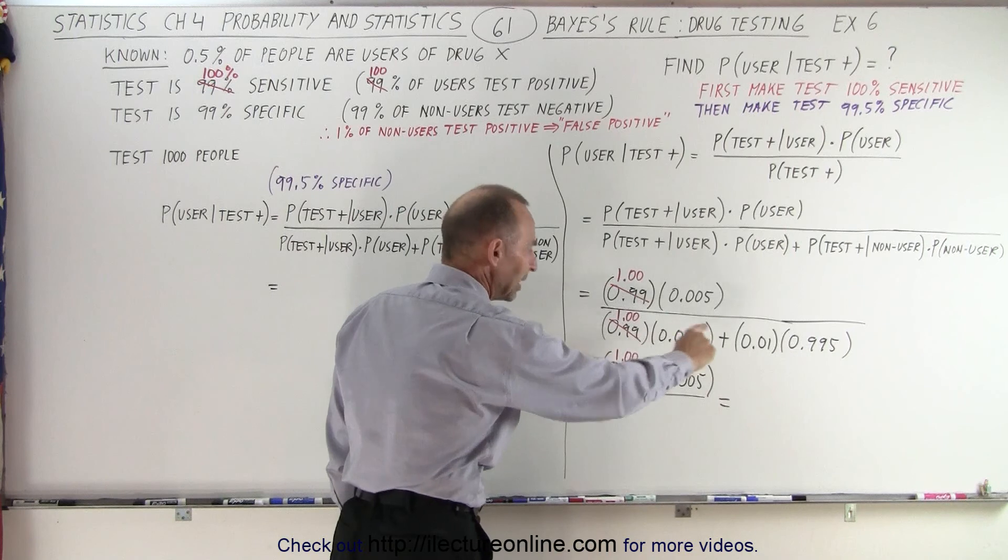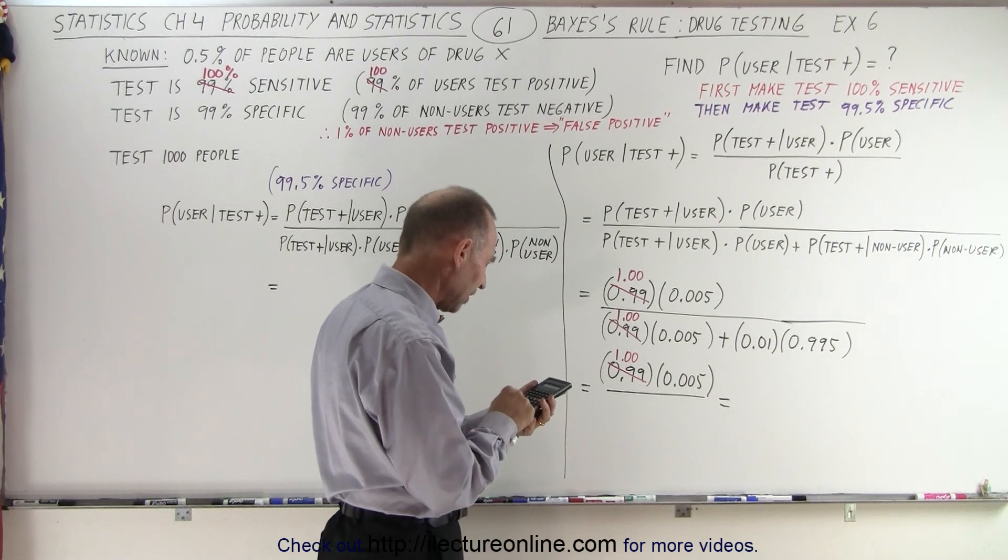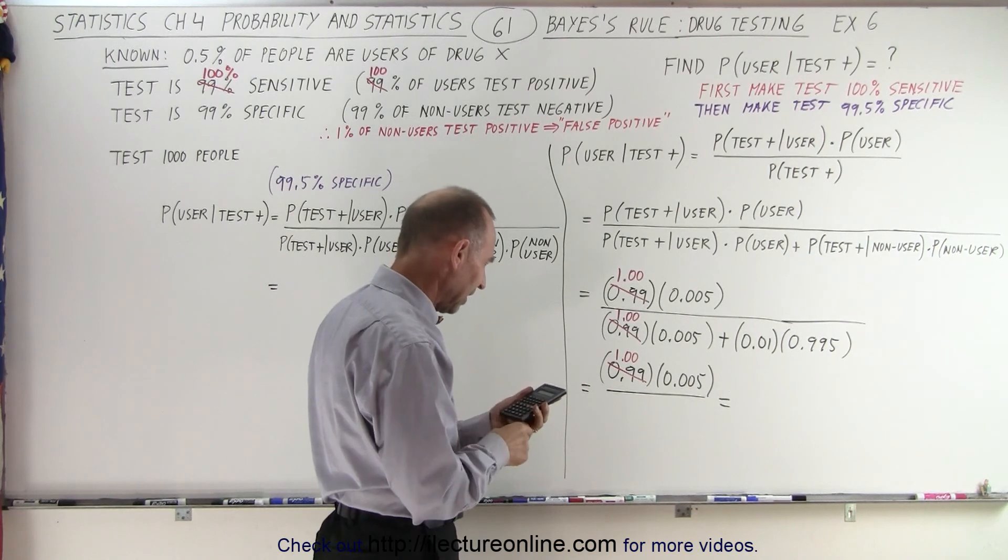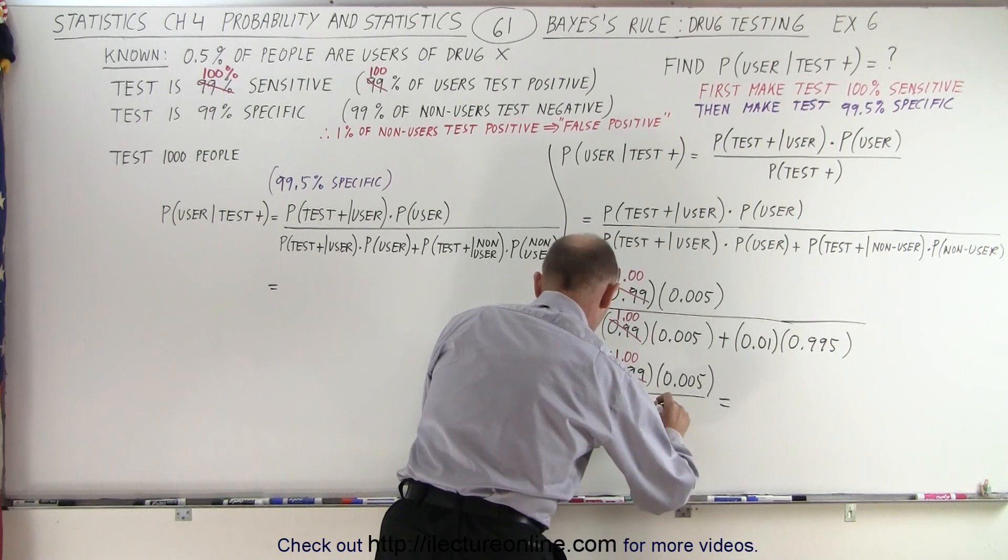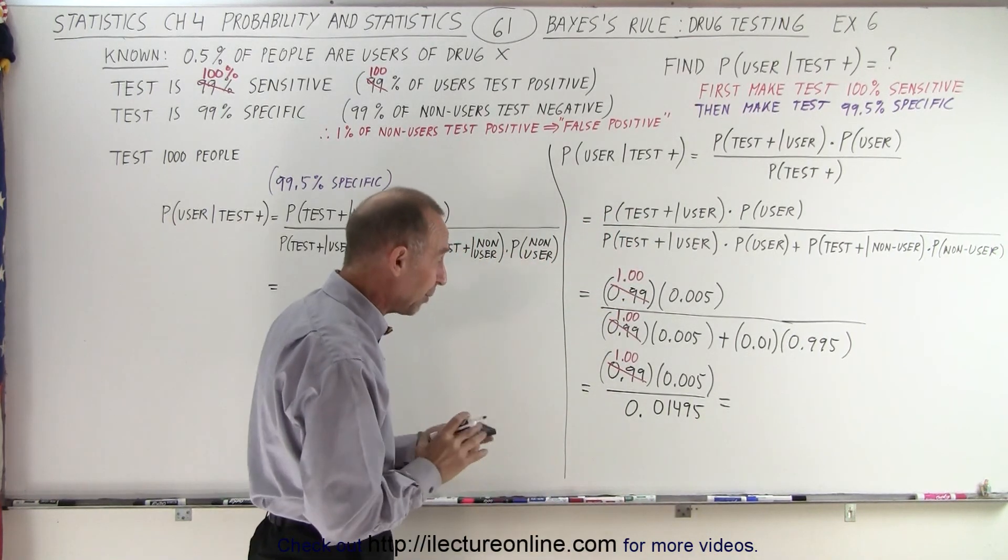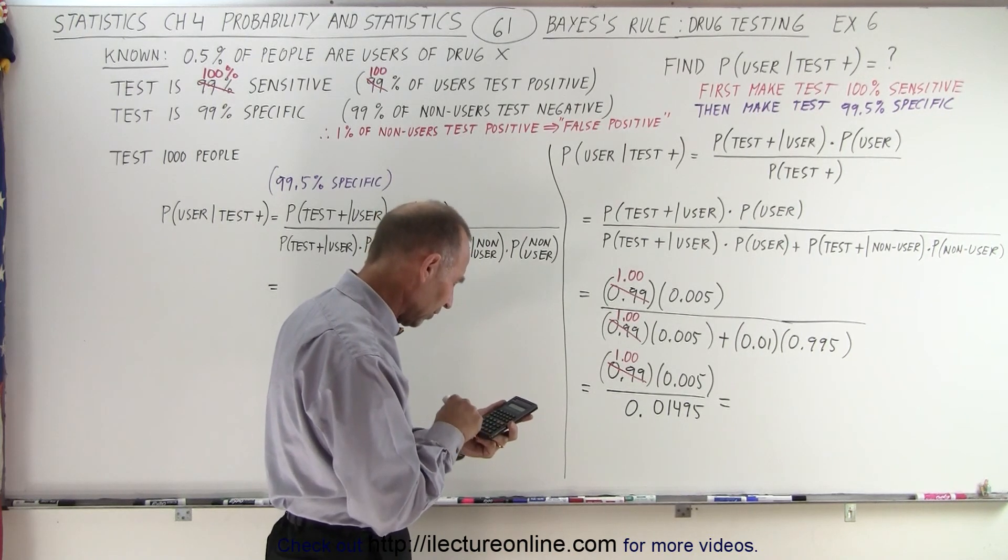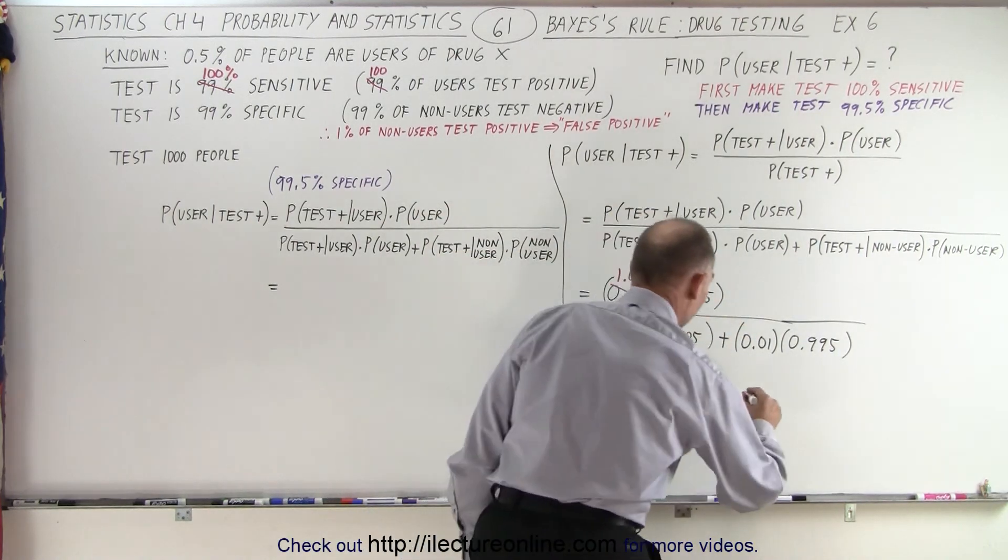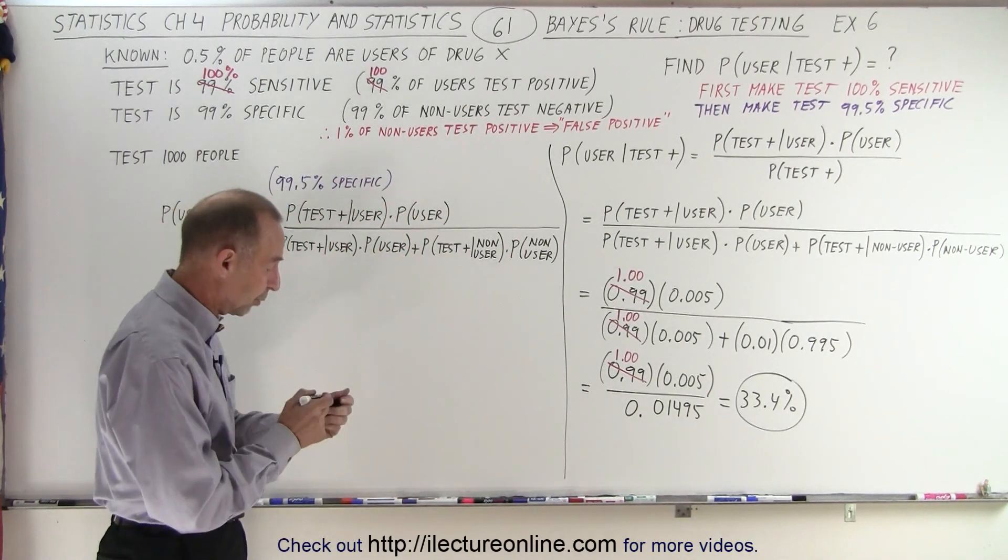So when we do all that we need to recalculate the denominator here. So the denominator will be 0.005 plus 0.01 times 0.99995 and so we get 0.01495 and I remember right that was just about what we got the previous time. So let's take the inverse of that times 0.005 equals and we get 33.4% and I believe it was 33.2% before, so there's hardly an improvement in the results of the test.